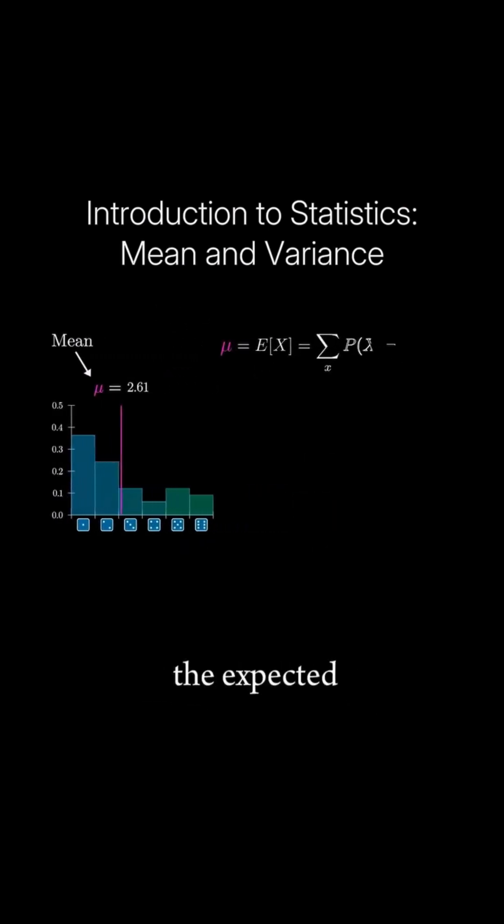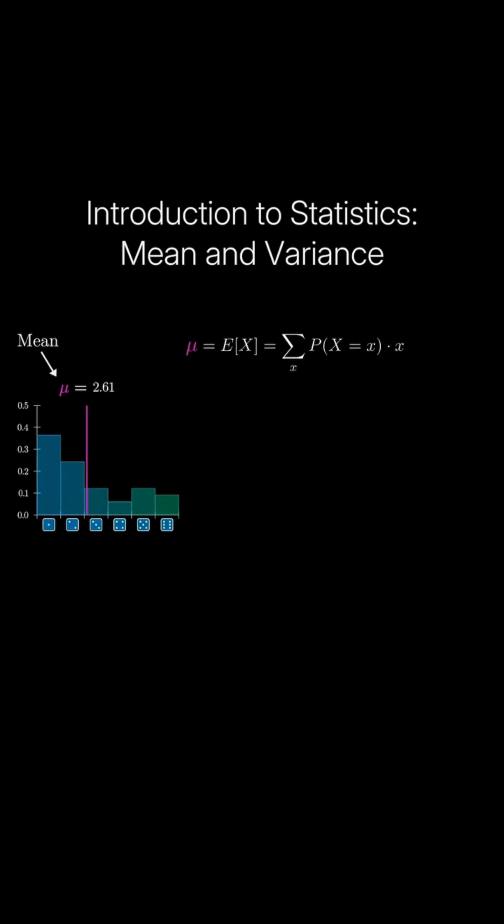It's calculated as the expected value of our random variable, which is a way of saying you go through all of the different possible outcomes and you multiply the probability of that outcome times the value of the variable.